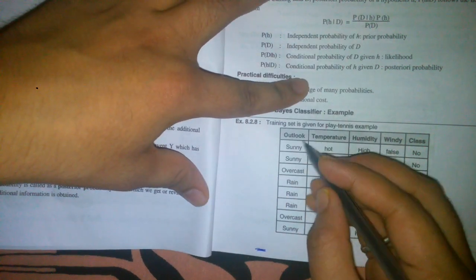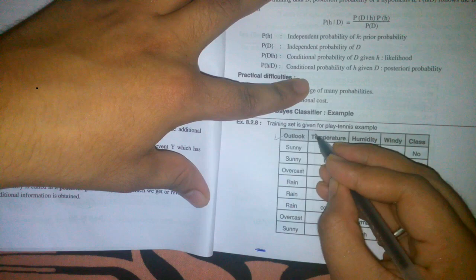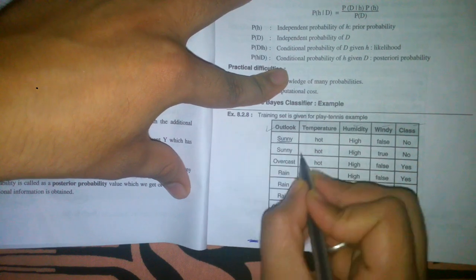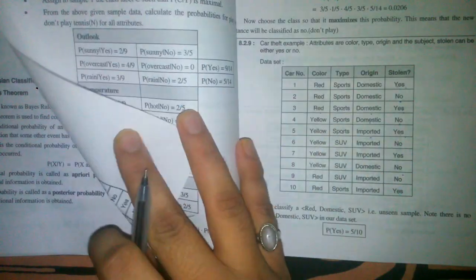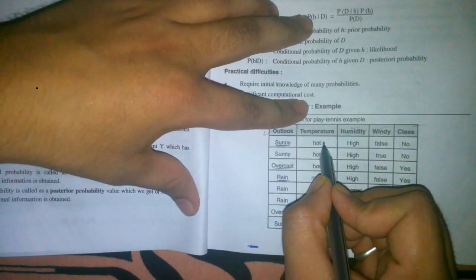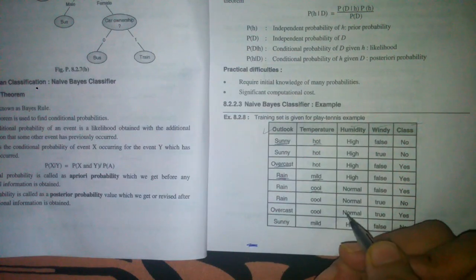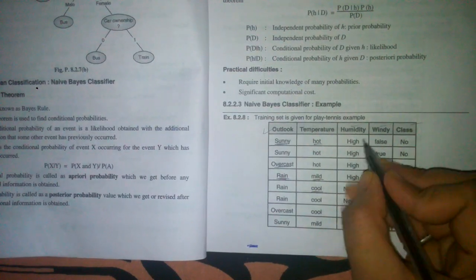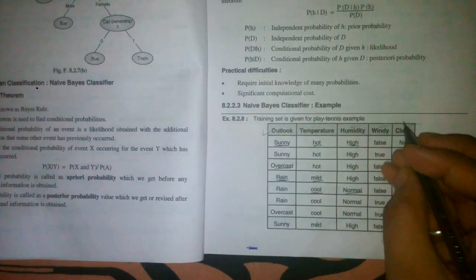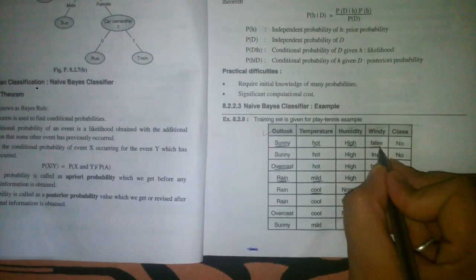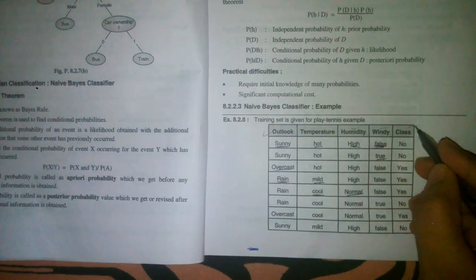First, we find the distinct attributes from each column. The first column has sunny, overcast, and rain. The second column has hot, mild, and cool. The third column has high and normal. The fourth column, windy, has just two distinct attributes: false and true. The class column has no and yes.